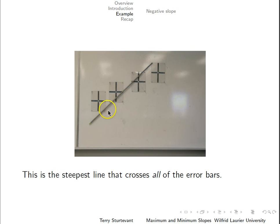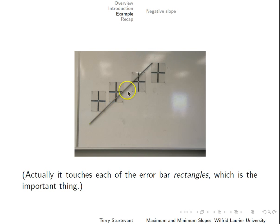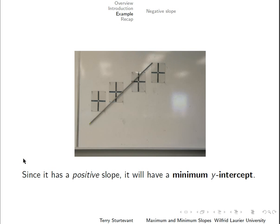This is the steepest line that crosses all of the error bars. It touches each of the error bar rectangles, which is the important thing. Because for this point, the error bars mean that the point is actually valid anywhere in this rectangle. You'll notice this line touches this corner of this rectangle and this corner of this rectangle, and goes through these points. This is called the line of maximum slope. Since it has a positive slope, it will have a minimum y-intercept, because the intercept will be down here.